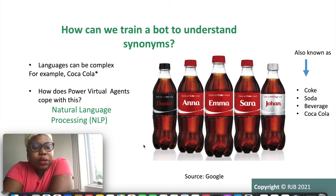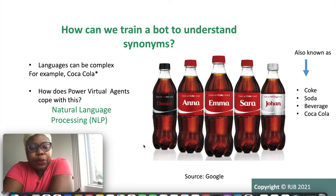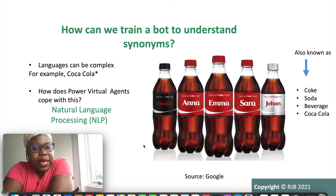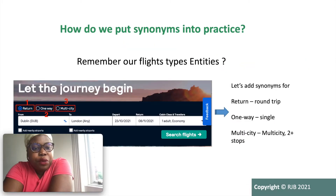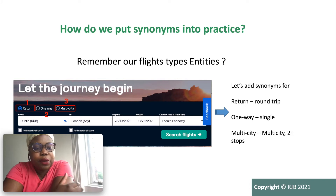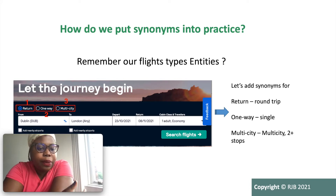How does Power Virtual Agents handle all of this? It does that through natural language processing. Power Virtual Agents uses natural language processing to understand the context and the language. From our flight example, we talked about flight types: return, one way, multi city.